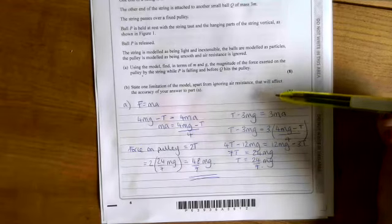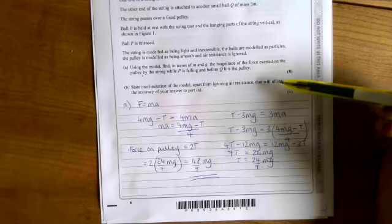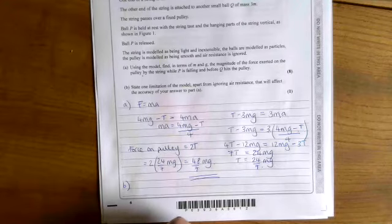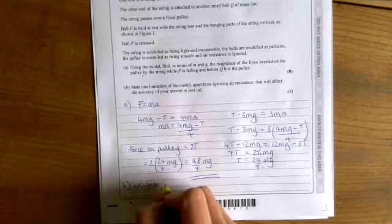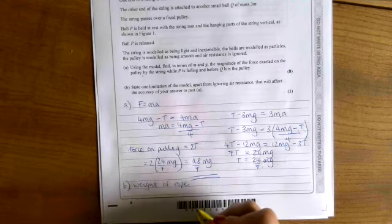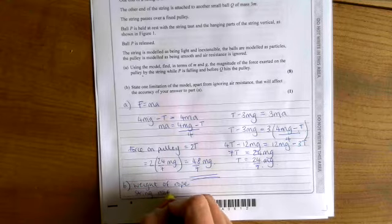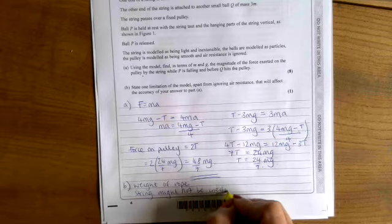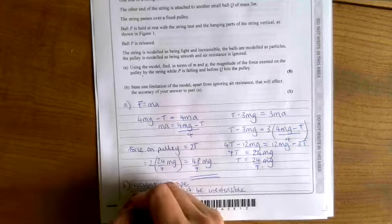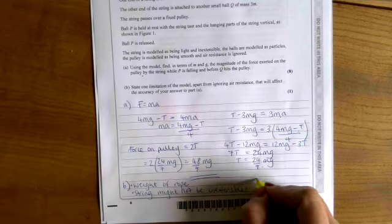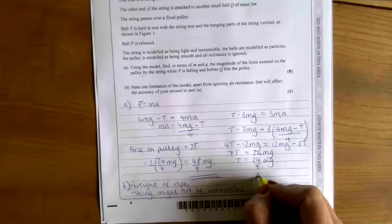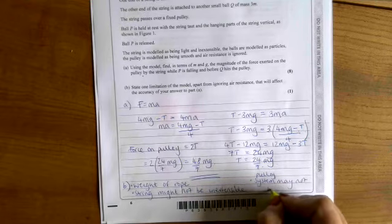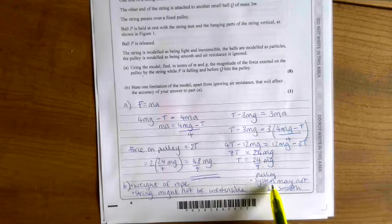Part B just says state one limitation of the model, apart from ignoring air resistance, that will affect the accuracy of your answer to part A. So for part B, there are a few different things we could write. We could have the weight of the rope. We could have the string might not be inextensible, so it might have a bit of elasticity to it. We could also say that the pulley system may not be smooth. And so any of those three things would be fine.